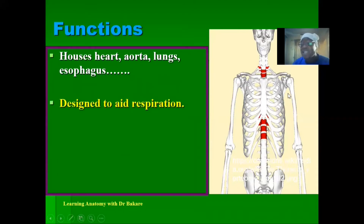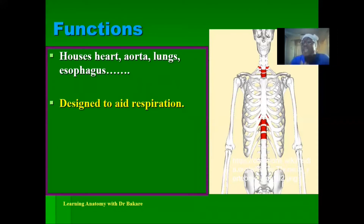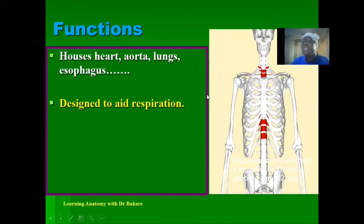The thoracic cage also aids respiratory processes. The thoracic cage is made up of a bony component and a cartilaginous component. This cartilaginous component enhances its ability to expand and also to relax. As it does this, it helps to increase the capacity of the thoracic cavity and also reduces it depending on whether it is inspiration or expiration. In this way, the thoracic cage aids respiratory processes because of its cartilaginous component, which allows it to expand and contract.